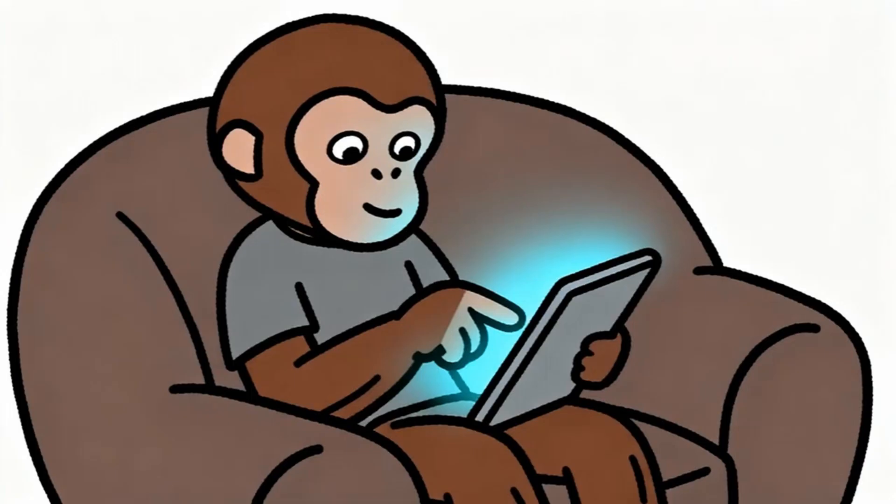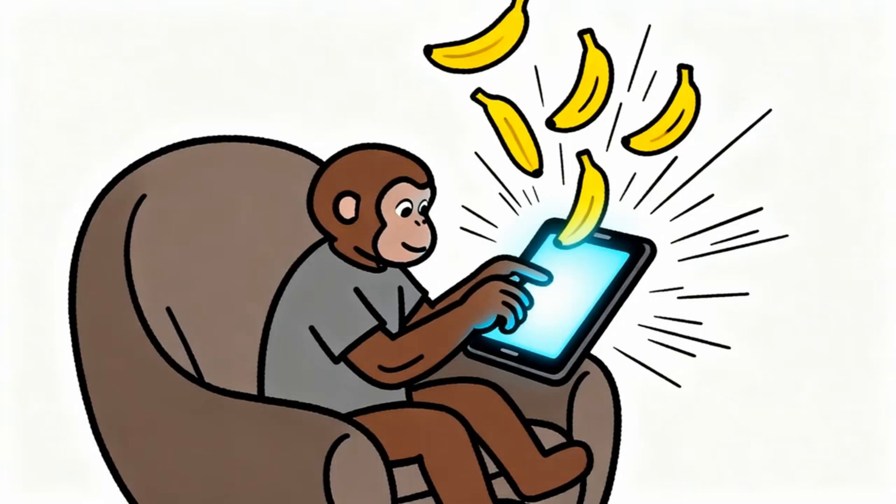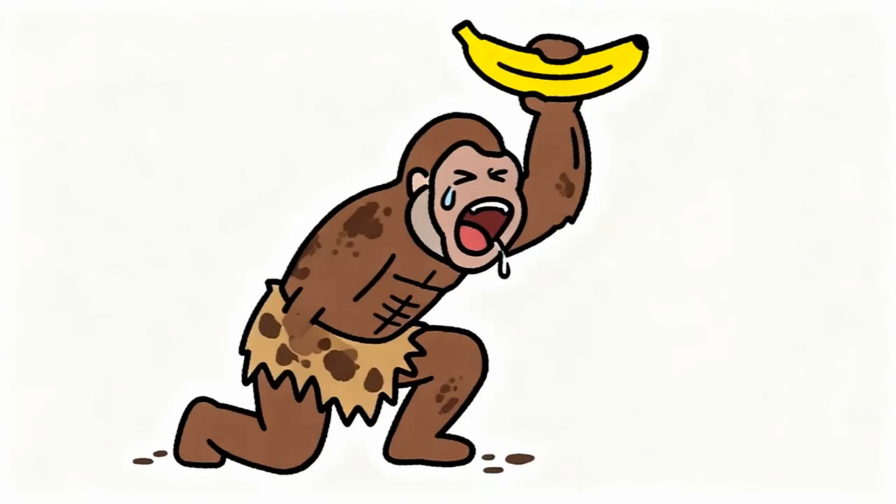But modern monkey lives very different life. Modern monkey sits in comfortable chair. Modern monkey presses button on magic rectangle. Instantly, dopamine banana appears on screen. No climbing required. No fighting required. No searching required. Just press button. Get dopamine banana. Press button again. Get another dopamine banana. Press button faster. Get bananas faster.